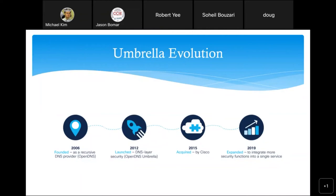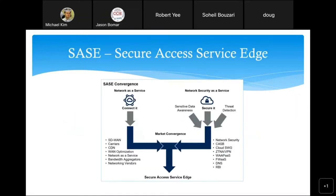The term being passed around a lot is SASE — Secure Access Service Edge — coined by Gartner around 2019. SASE converges network-as-a-service functions like SD-WAN together with network security as a service. This includes CASBs (cloud access security brokers), firewall as a service, cloud secure web gateways, producing a unified edge regardless of where a company's workers, branches, or headquarters might be located.